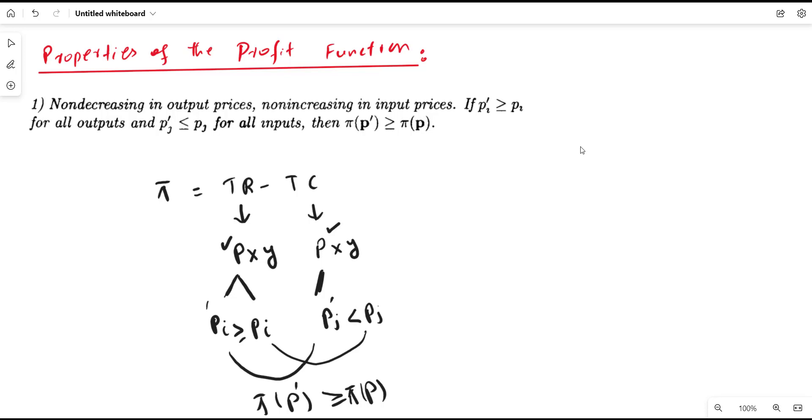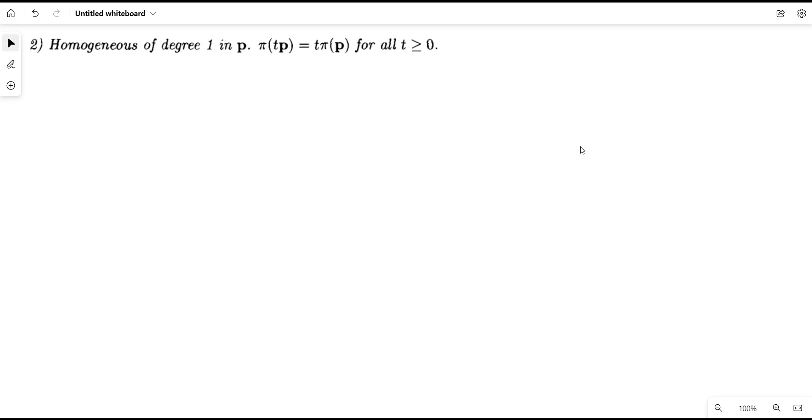The second property is given by this, which means that the profit function is homogeneous of degree 1 in prices. To understand this property, let us take an example.